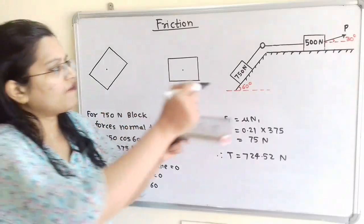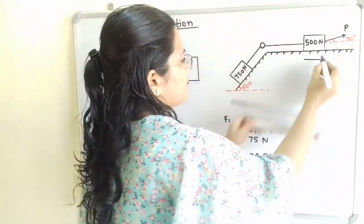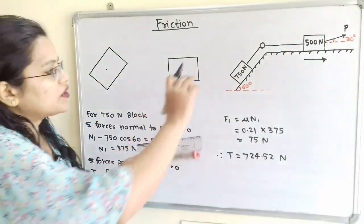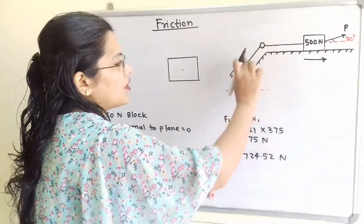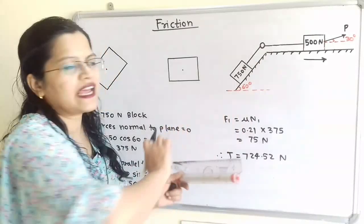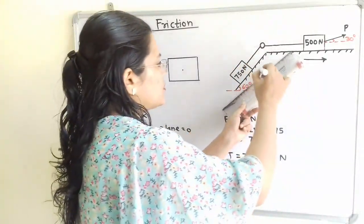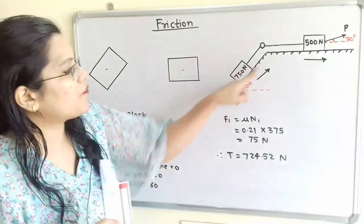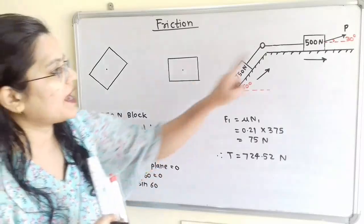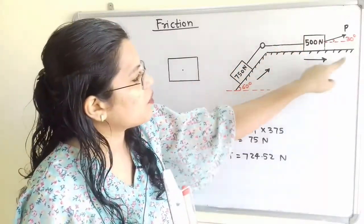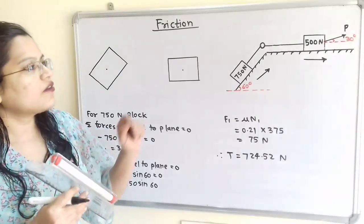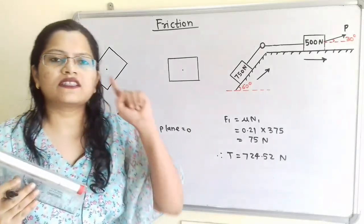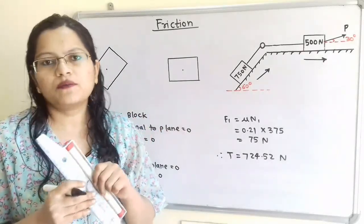I will show the motion of the 500 N block. This block is connected to 750 N, so the motion of the 750 N block is in the upward direction on the inclined plane. The motion of the 750 N block is upward and the motion of the 500 N block is towards the right hand side. The tension is created in the opposite direction.